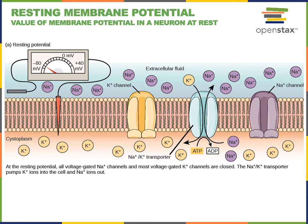Sodium and potassium can cross the plasma membrane through a variety of channels. Ion leak channels stay open all the time and are not gated. Other ion channels can be gated, meaning they can open or close. Some are ligand-gated ion channels that are chemically gated by a neurotransmitter, and others are voltage-gated — they will be stimulated to open or close in response to changes in the membrane potential.